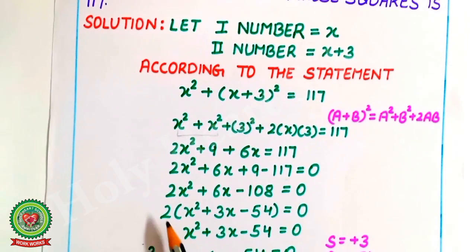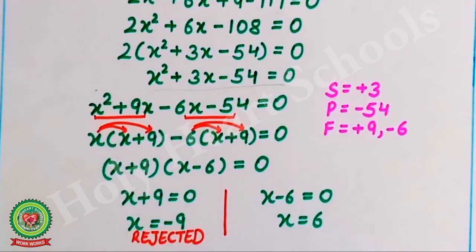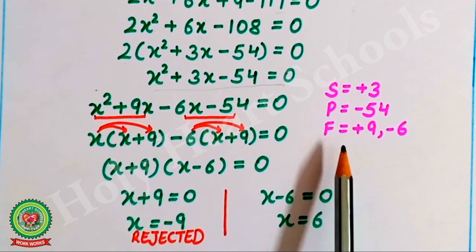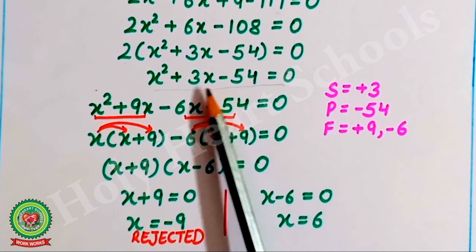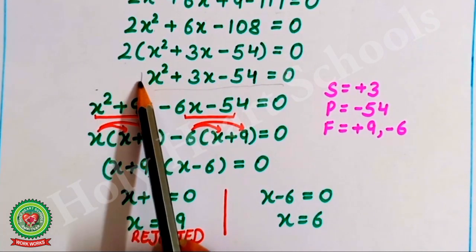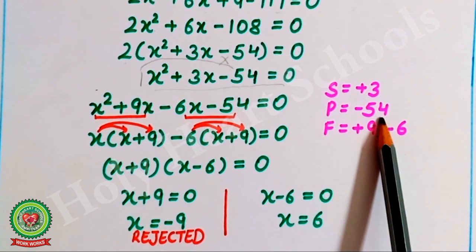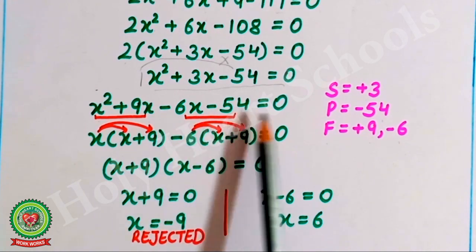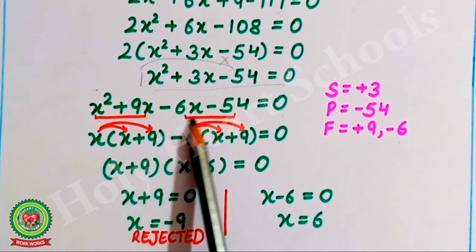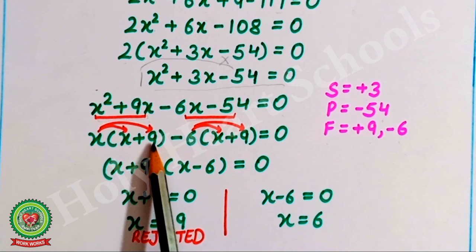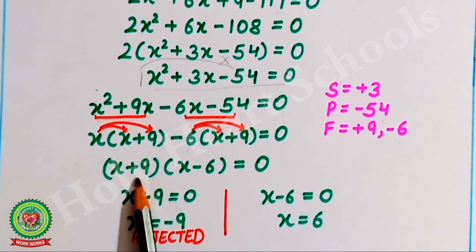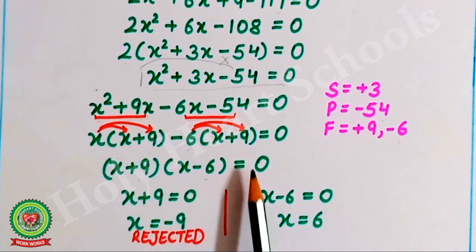Taking 2 as common, the equation becomes x squared plus 3x minus 54 equals 0. This is in the form of a quadratic equation, which can be solved by the sum-product method or by formula. The sum is plus 3 and the product is minus 54, giving factors plus 9 and minus 6. Splitting the middle term: x squared plus 9x minus 6x minus 54 equals 0. After pairing and taking common: x(x plus 9) minus 6(x plus 9) equals 0.